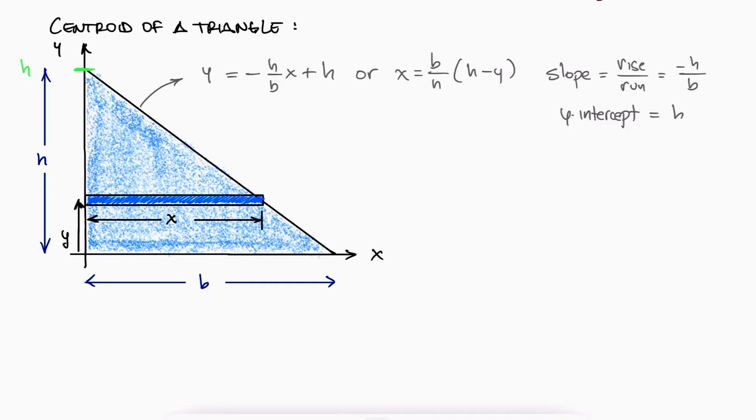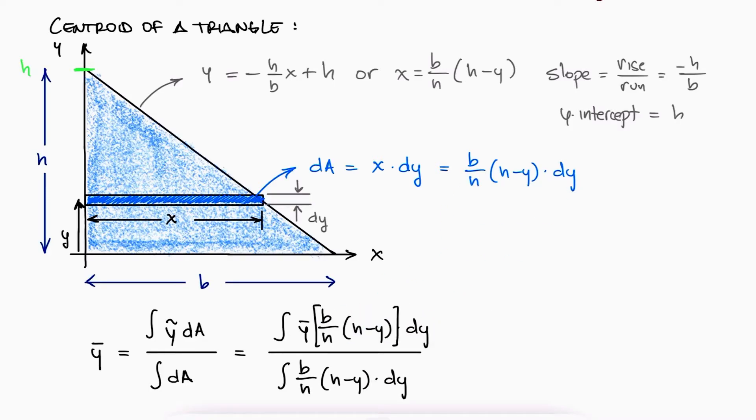With that equation, the dA term for that and any other rectangle can be written as x times dy, which would be b over h times h minus y times dy. Using the centroid equation in terms of the integrals, and substituting dA, the integral that needs to take y from 0 to h, in the numerator would be 1/6 bh squared, and in the denominator 1/2 bh.